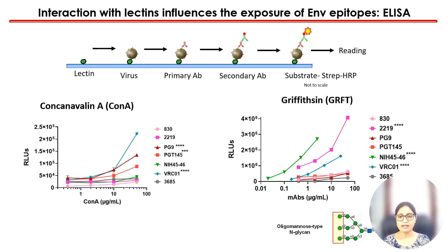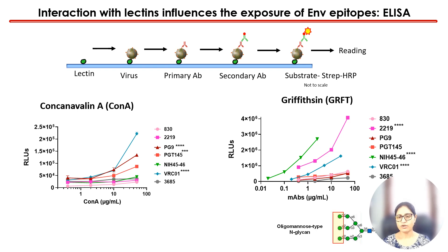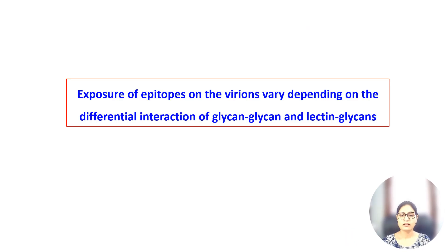We also tested the lectin Griffithsin, which only binds to terminal mannose sugars present on high-mannose glycans on the HIV-1 particle. When we tested Griffithsin, we found that even the V3 antibody 2219 epitopes are exposed, whereas the V2Q antibodies including PG9 and PGT145 are not impacted and cannot bind. VRC01 and NIH 4546 also show improved binding in the presence of Griffithsin. These data show that the exposure of epitopes on virions can vary depending on the differential interaction of glycan-glycan and lectin-glycan interactions.